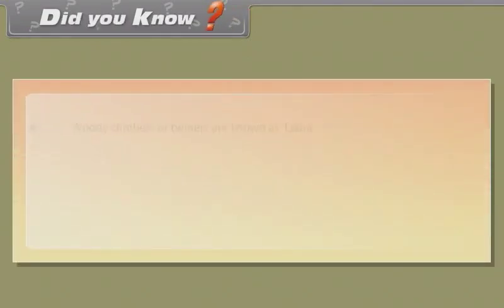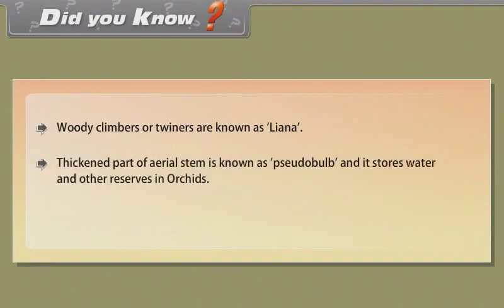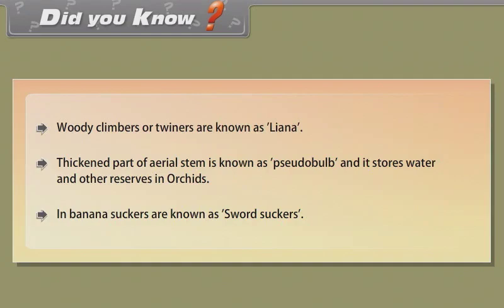Did you know? Woody climbers or twiners are known as lianas. The thickened part of an aerial stem is known as pseudobulb, and it stores water and other reserves — in orchids and banana. In banana, suckers are known as sword suckers.